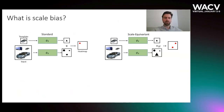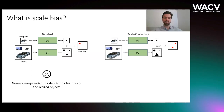Before going into details of our approach, let's clarify what we mean by scale bias. Consider two Siamese trackers: a standard one on the left, and its scale equivariant extension. If two objects appear at different scales, it's challenging for a standard tracker to explicitly compare their features. The tracker in such a setup will most likely be biased towards objects of one size. A scale equivariant tracker, on the other hand, can effectively model inter-scale similarities, and thus is not biased towards the specific size of the object.